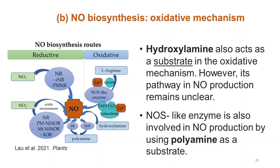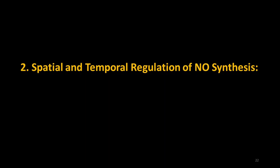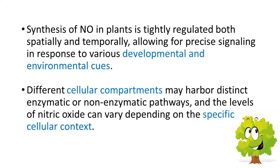There are also other factors that regulate nitric oxide synthesis in plants. Environmental factors such as light, temperature, nutrient availability, and stress conditions can modulate nitric oxide synthesis in plants. For instance, nitrate availability, light exposure, and pathogen attacks can influence the activity of nitrate reductase, impacting the rate of nitric oxide production. Synthesis of nitric oxide in plants is tightly regulated both spatially and temporally, allowing for precise signaling in response to various developmental and environmental cues. Different cellular compartments may harbor distinct enzymatic or non-enzymatic pathways, and the levels of nitric oxide can vary depending on the specific cellular context.